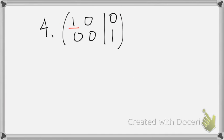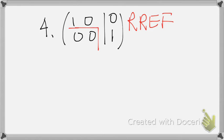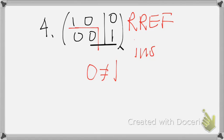The fourth matrix has a pivot and is in reduced row echelon form. However, the last row gives 0 = 1, which is not a true statement, so this system is also inconsistent.